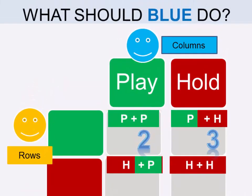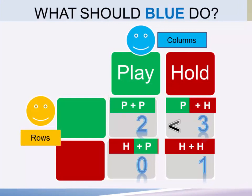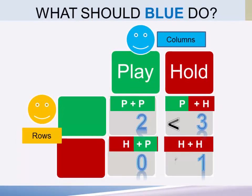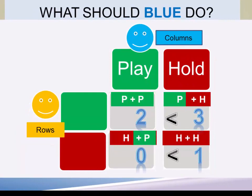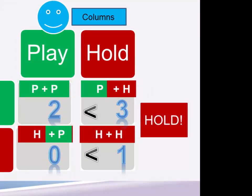If you play when orange plays, you're going to get $2,000. But if you hold when orange plays, you'll get $3,000. On the other hand, what should you do when orange chooses to hold? If you play when orange holds, you're going to get zero. And if you hold when orange holds, you'll get $1,000. So looking at this from the perspective of player blue: what should you do when orange chooses play? You should always choose hold, because $3,000 is more than $2,000. And what should you do when orange chooses hold? You should always choose hold, because $1,000 is more than zero.